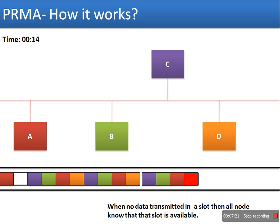This is how PRMA — Packet Reservation Multiple Access — works. The frame is divided into equal-length time slots, and stations send data according to slotted ALOHA. If a node successfully sends a frame in a slot, that slot is reserved for that node in the following frames. Thank you very much.